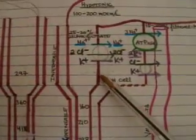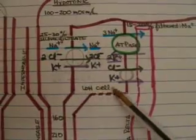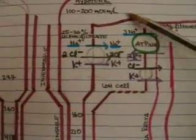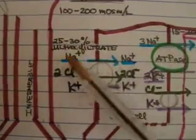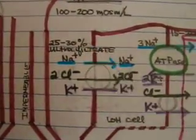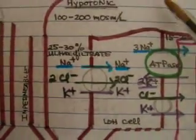Looking at the thick ascending limb of the loop of Henle — if we were to magnify one of the cells in the thick portion of the ascending limb — the first thing we should see is the reabsorption of sodium. Approximately 25% to 30% of the total ultrafiltrate is created by the glomerulus. If we backtrack to the very beginning of the nephron at Bowman's capsule, the ultrafiltrate that enters into the proximal tubule — 65% to 75% of the sodium is absorbed there.